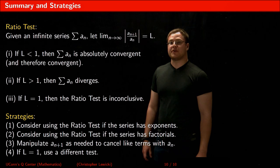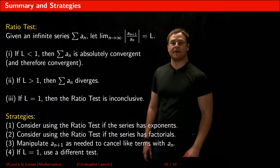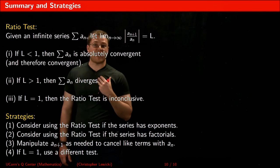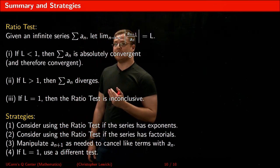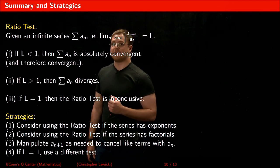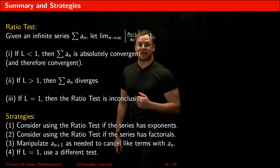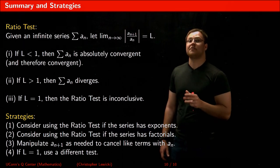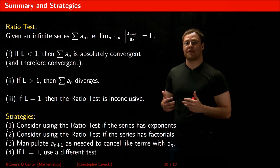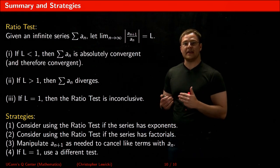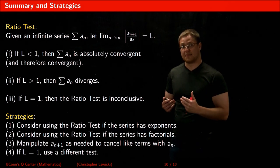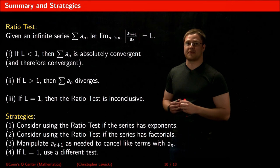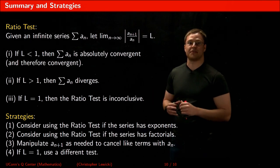To conclude, the ratio test says: if the limit is less than 1, the series absolutely converges; if greater than 1, the series diverges; if equal to 1, the test is inconclusive. Consider using the ratio test when a series has many exponents and/or factorials, as you can often cancel many common terms. Finally, if the limit equals 1, choose a different test since the ratio test cannot determine convergence or divergence in that case.